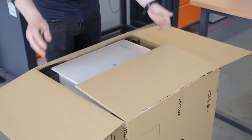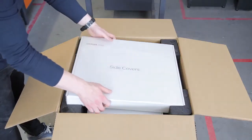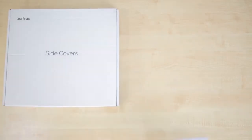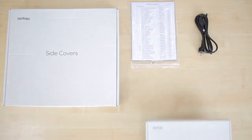First, you'll need to open up the box and remove the contents that are placed on the upper cushioning. This includes the side covers, the packing list, the power cable, and the starter kit.